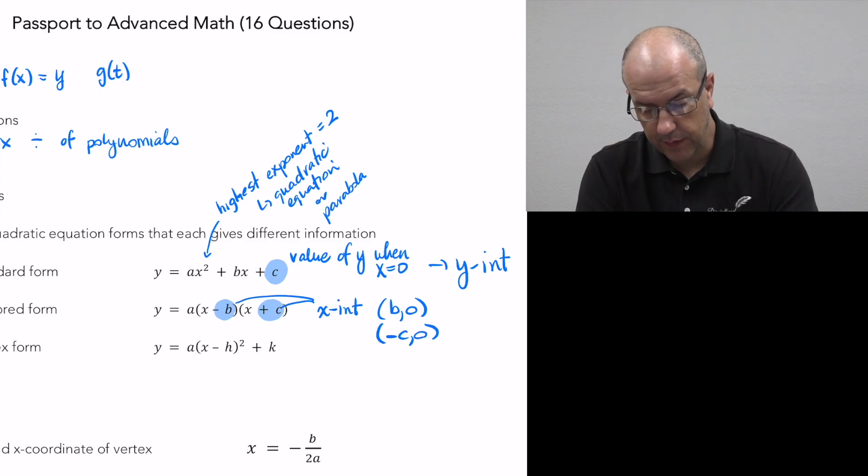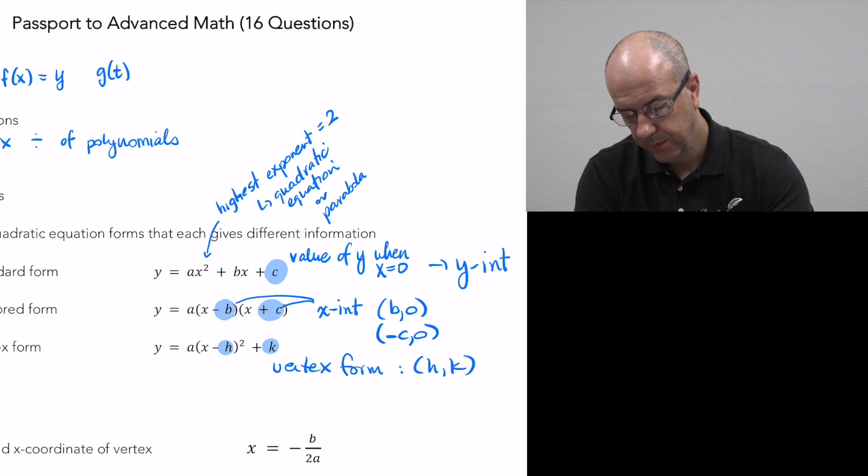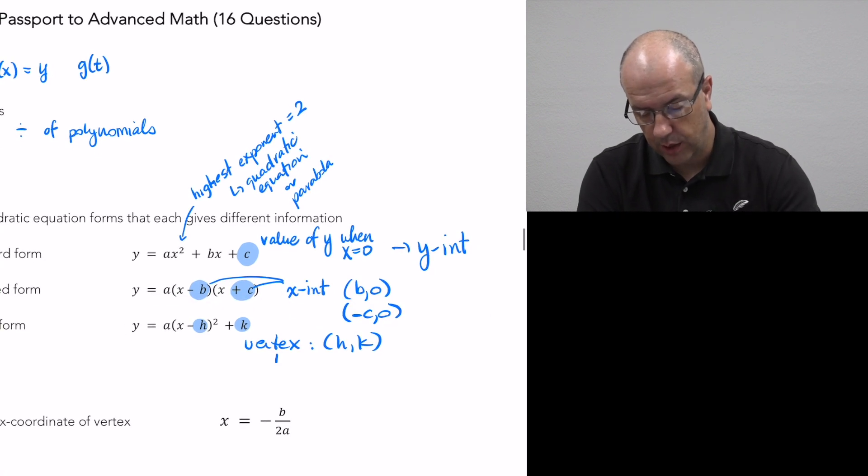The last one obviously is called vertex form, so the h and the k are super important here. Vertex form, of course, gives you the vertex of the equation. And they will also describe this as the maximum or the minimum depending on whether the graph opens up or opens down.